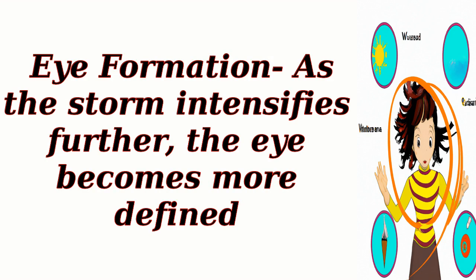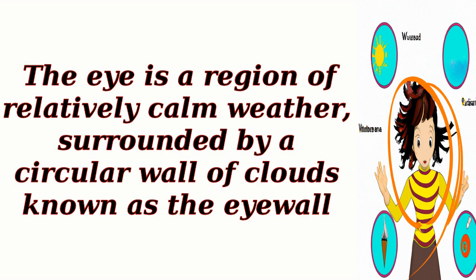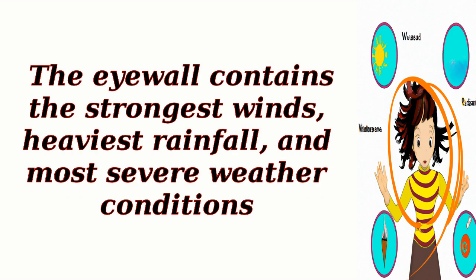Eye formation: as the storm intensifies further, the eye becomes more defined. The eye is a region of relatively calm weather, surrounded by a circular wall of clouds known as the eye wall. The eye wall contains the strongest winds, heaviest rainfall, and most severe weather conditions.